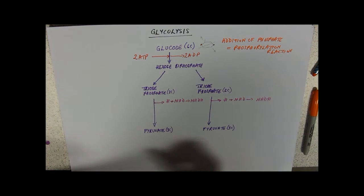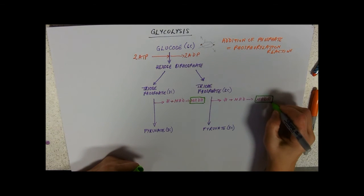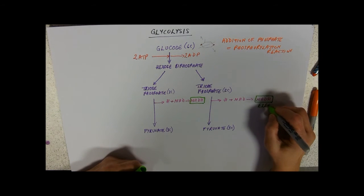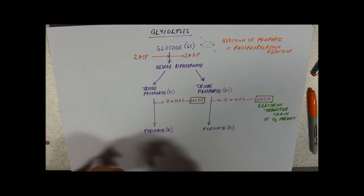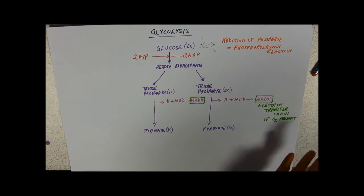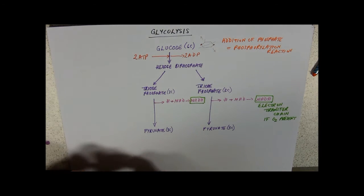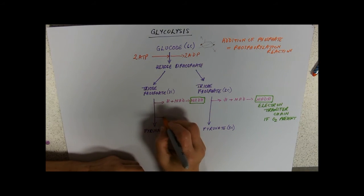And remember, of course, that this is going to be electron transport chain if oxygen is present. If there's no oxygen present, there's no point in sending it to the electron transport chain because there's no terminal acceptor and nothing's going to happen to it. Incidentally, in that process of removing the hydrogen from triose phosphate, we're also going to release from that reaction enough energy to make two ATP.